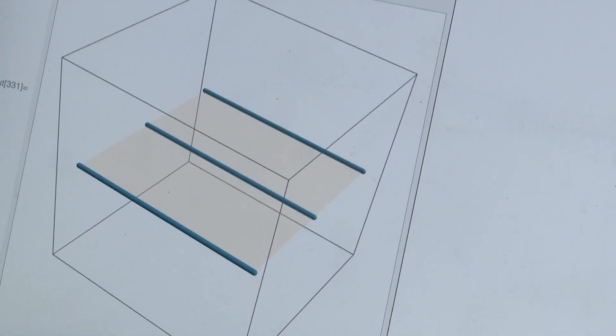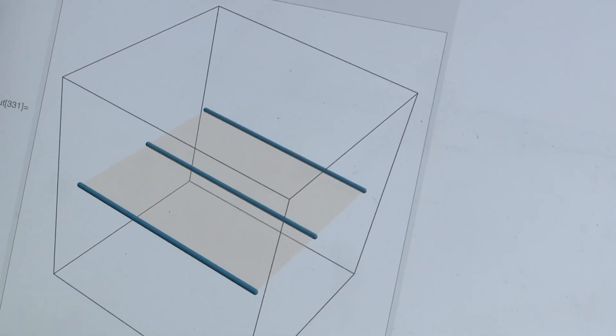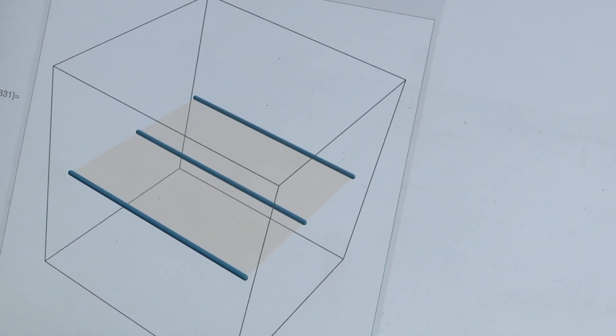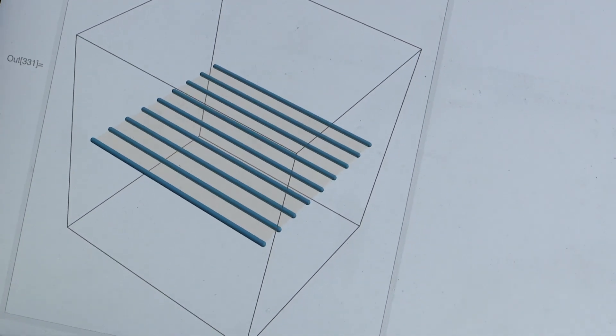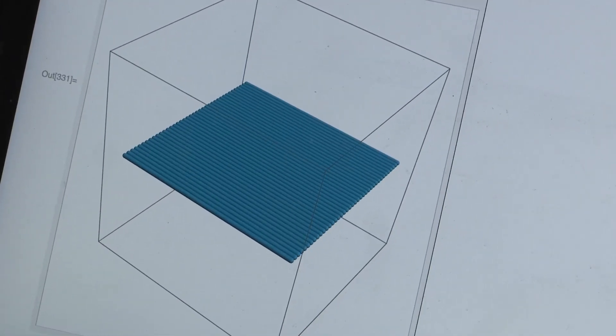This here is going to be the simplest ruled surface you can possibly have, is the plane. It's just created with a whole bunch of straight lines, so I can just continuously fill it with straight lines.